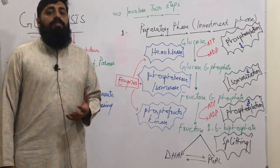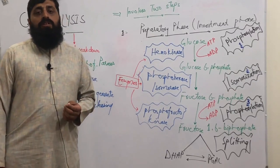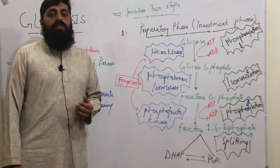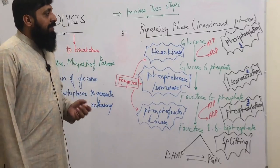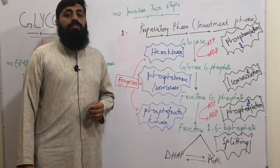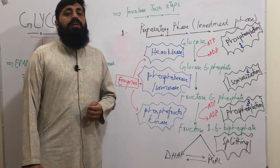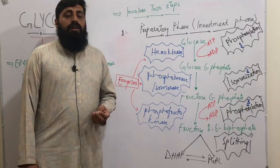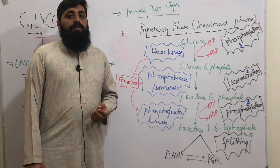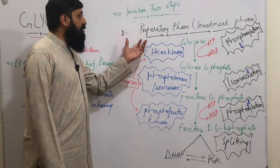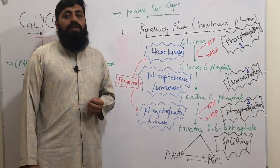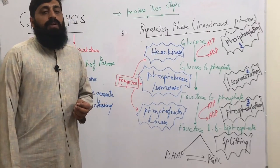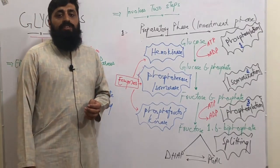The first step of glycolysis is called the investment phase. Investment itself means where we spend something and later earn a profit. After investment comes profit. It is also called the preparatory phase, where we prepare glucose by passing it through different enzymatic reactions and take it all the way to pyruvate. To understand it in depth, we divide it into: first, the preparatory phase, and second, the oxidative or profit phase where we get profit in the form of ATPs.